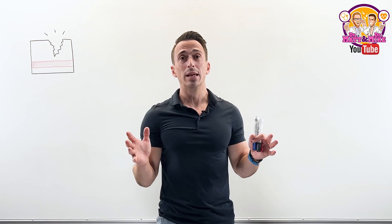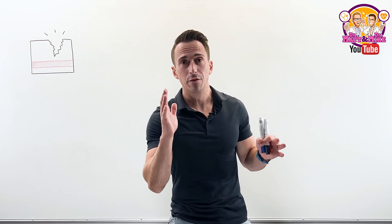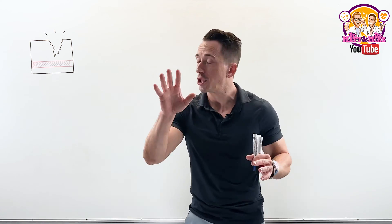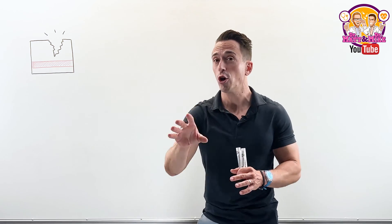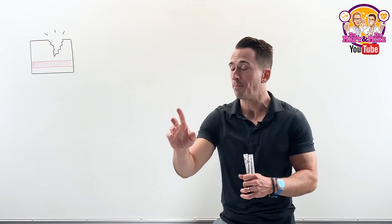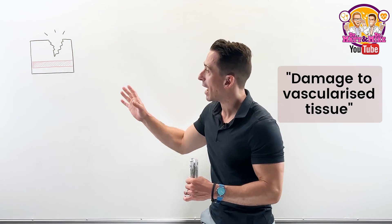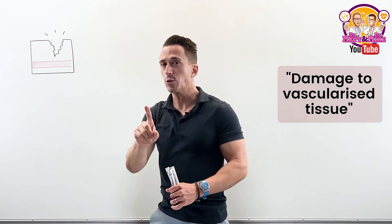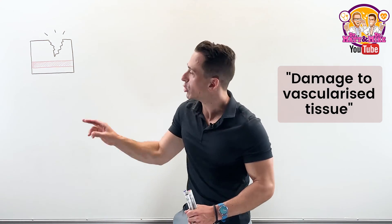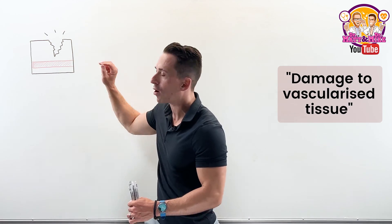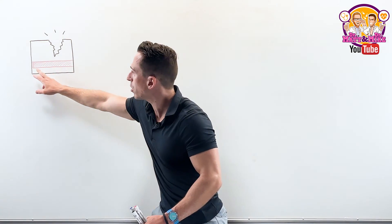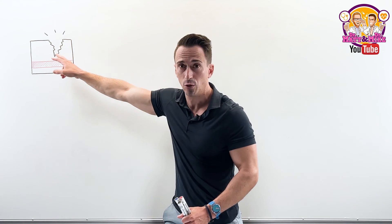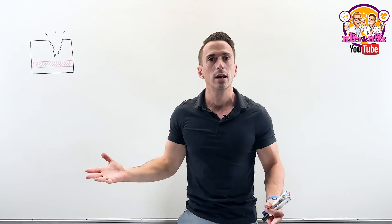The first place we need to begin is inflammation. So what is inflammation? Well, inflammation occurs any time you have damage to vascularized tissue. That's really important — damage to vascularized tissue. If there is no blood vessel to that tissue, you're not going to get inflammation.